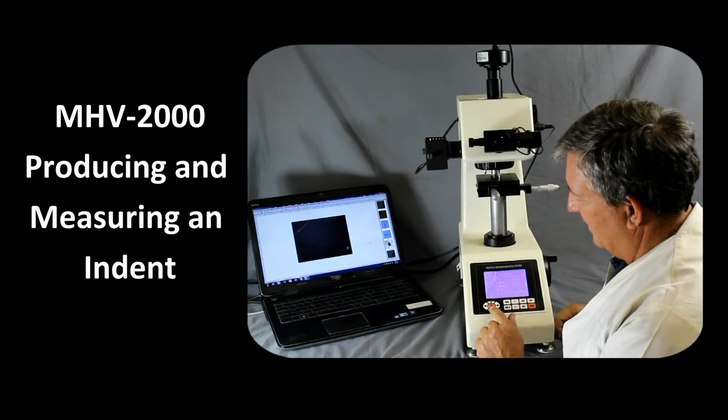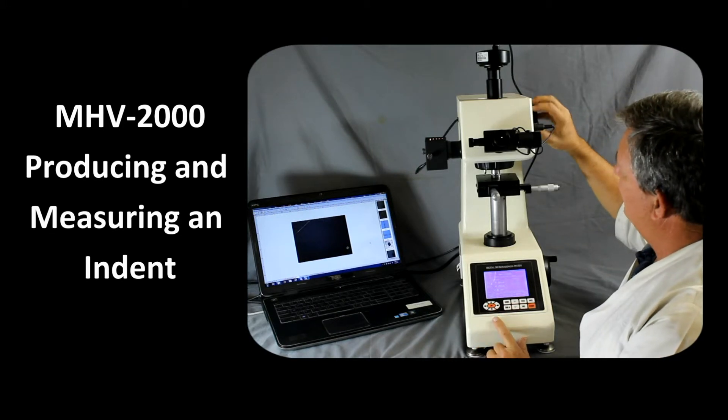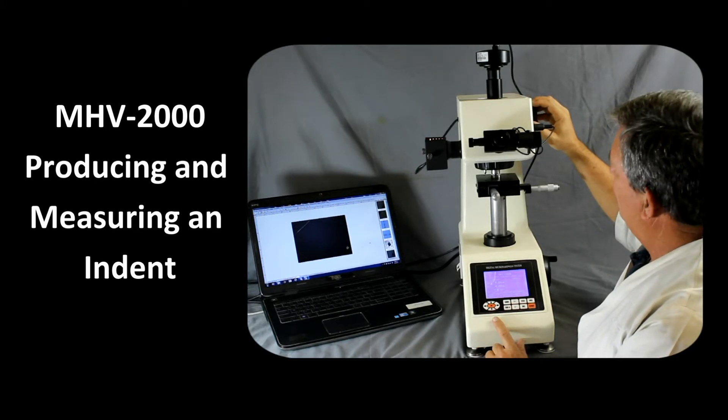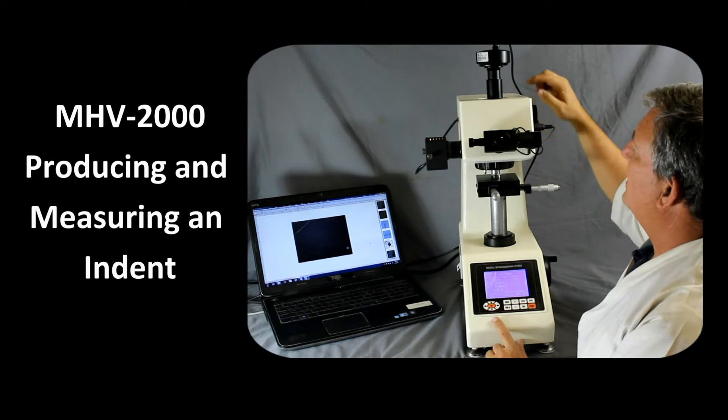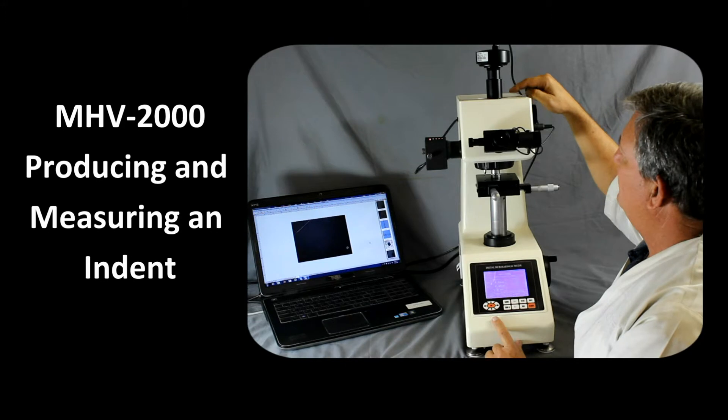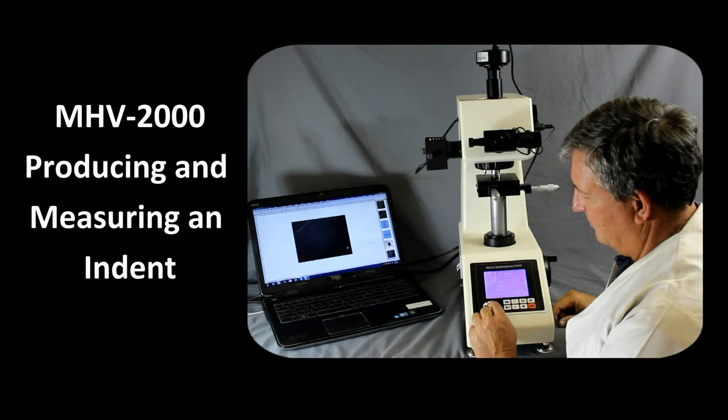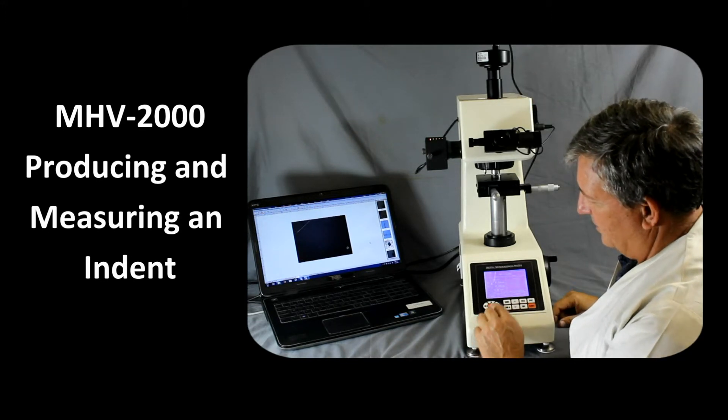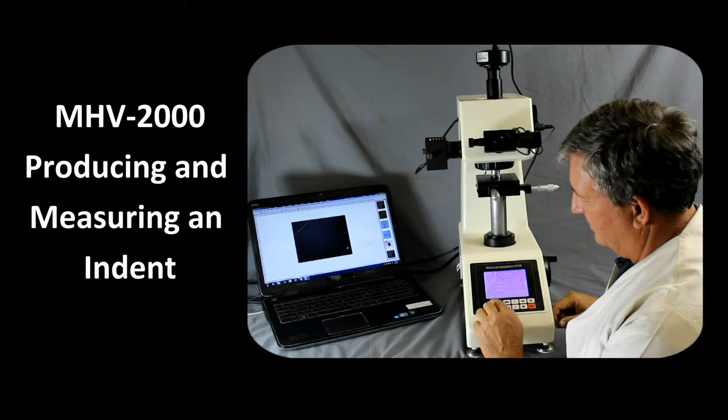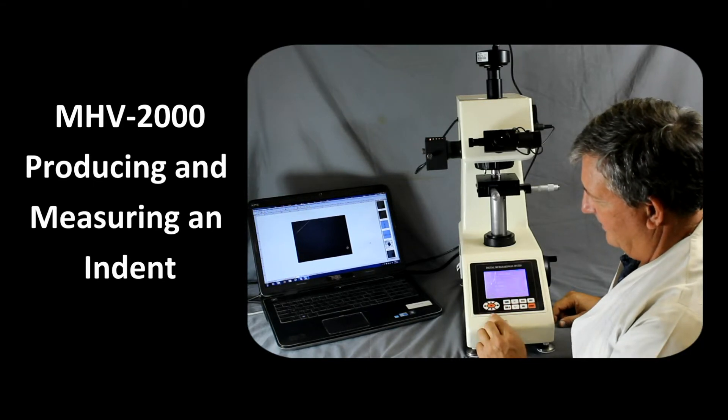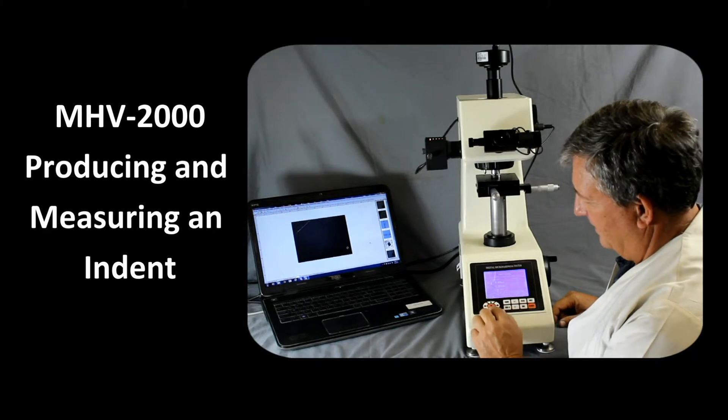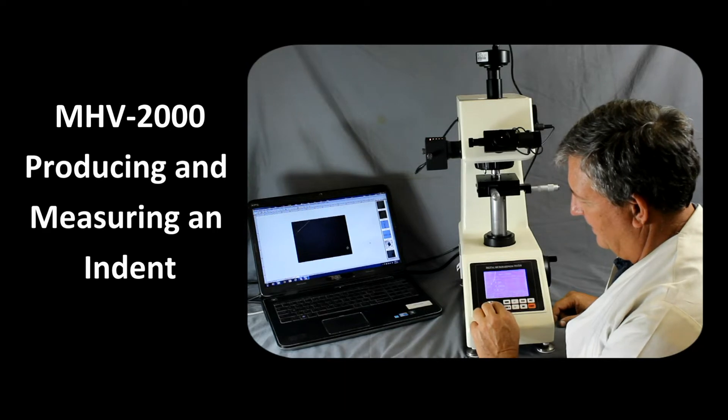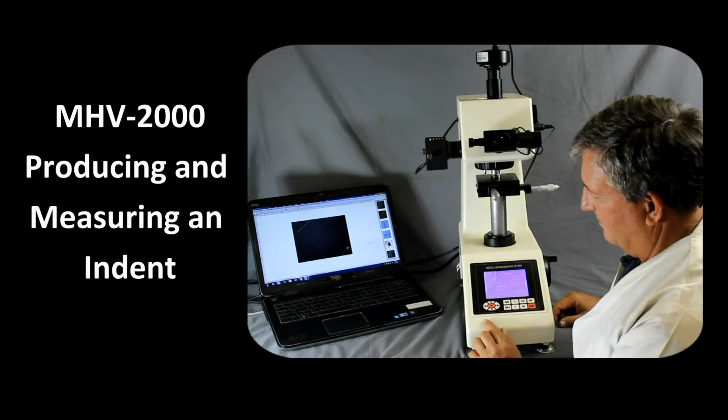Now for setting up the parameters here, we can adjust the load with this knob over here. And right now we have it set for 1000 grams. It is possible to use a 2000 gram load on the MHV-2000. If we do that, we're going to have to go into the programming mode to change this parameter here to the higher load. And you see this goes up to the higher load. But since we're only using the 1000 gram load, we'll go ahead and enter this. So we'll go ahead and press enter to get back out of the program.